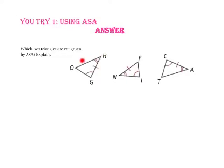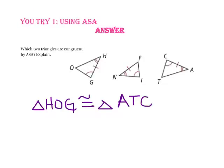In triangle-HOG, we have side-HG included between angle-H and angle-G. In triangle-FIN, we have side-FN, but it is not included between angles-N and I. However, in triangle-CAT, we have included side-CA between angle-C and angle-A. Therefore, triangle-HOG is congruent to triangle-ATC by angle-side-angle, and notice that we listed our corresponding parts in order.